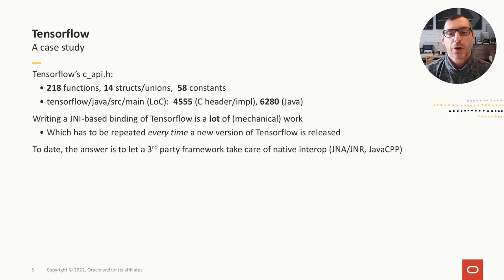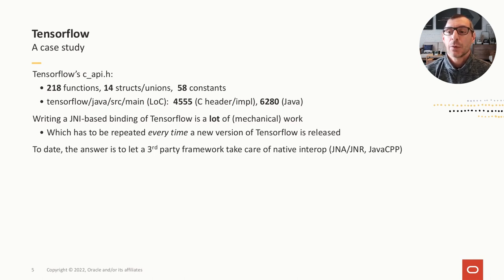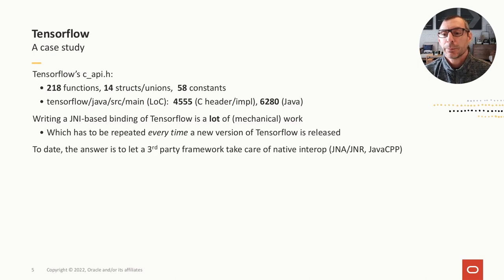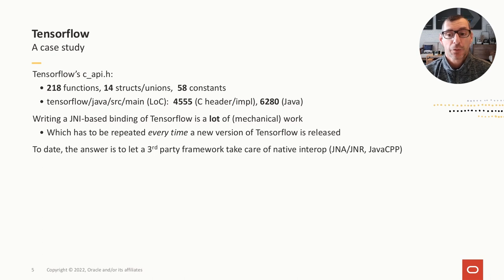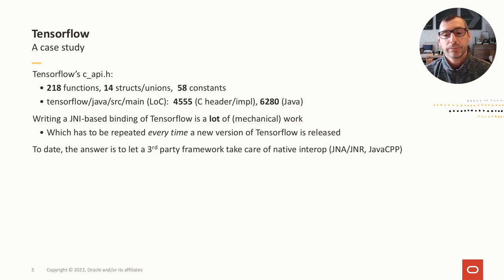To look at something more concrete, let's take the TensorFlow C API. This is a sizable C API with several functions, structs, unions, and constants. All these program elements need corresponding JNI code so that a Java application can access them. If we look at the old TensorFlow Java repository, we find that almost half of the code is not Java code, but JNI code written in C or C++.